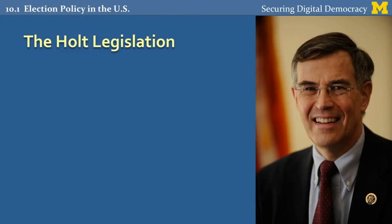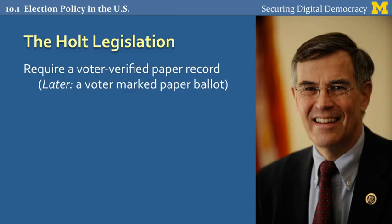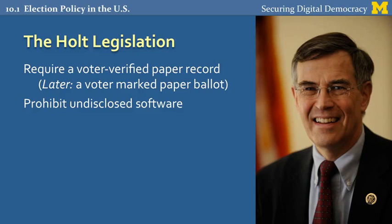There have been some attempts to improve the state of things. Probably the most significant are due to Congressman Rush Holt from New Jersey. Congressman Holt consulted with computer scientists and voting experts to draft a series of bills that would reform the federal process. Holt's legislation would require a voter verified paper record — or in later versions, a voter marked paper ballot — prohibiting the use of paperless DREs. It would also prohibit the use of undisclosed software, so every piece of software in the voting system had to be known about and available to security review. Furthermore, it would prohibit internet connections as part of the voting system and introduce uniform requirements for mandatory random audits. Although Holt's bills had pretty broad bipartisan support, they unfortunately never managed to pass the House, and so to this day, this kind of reform is lacking.